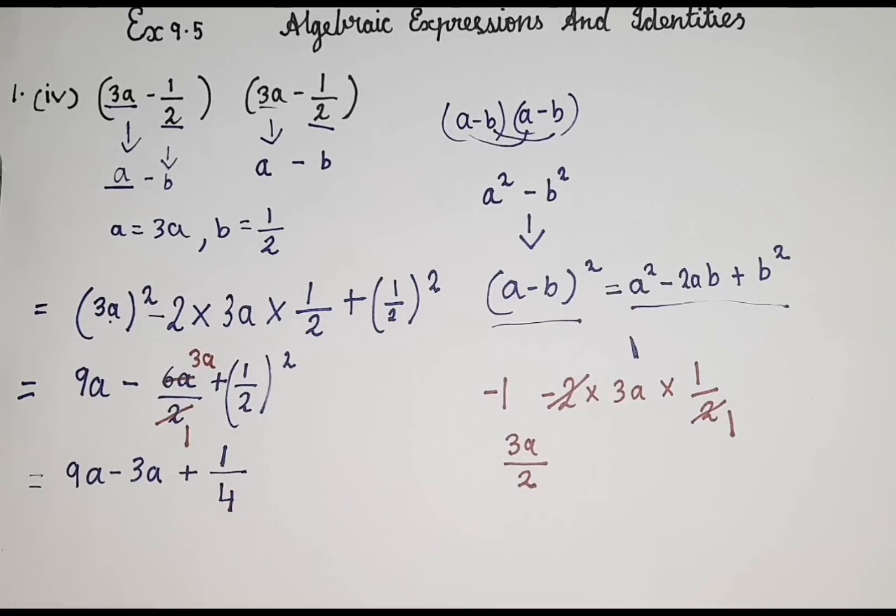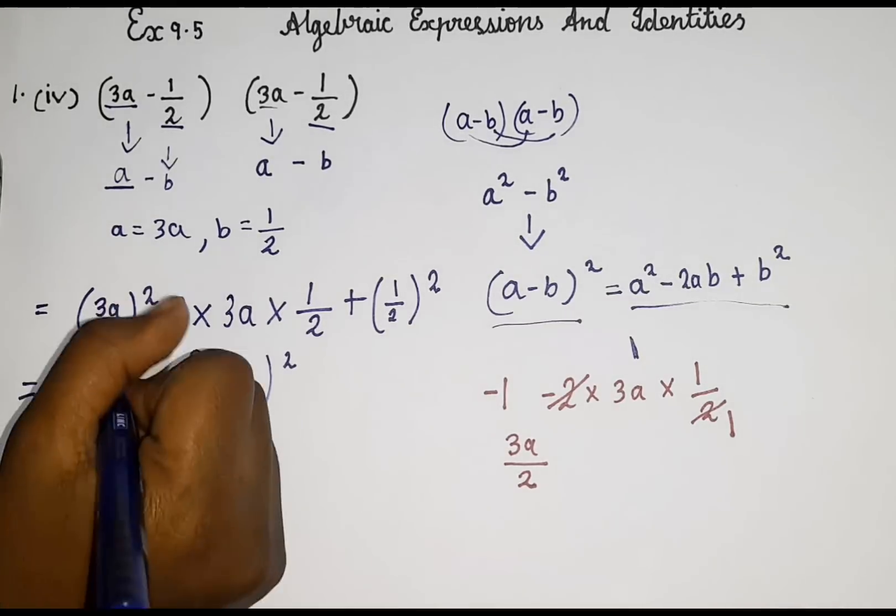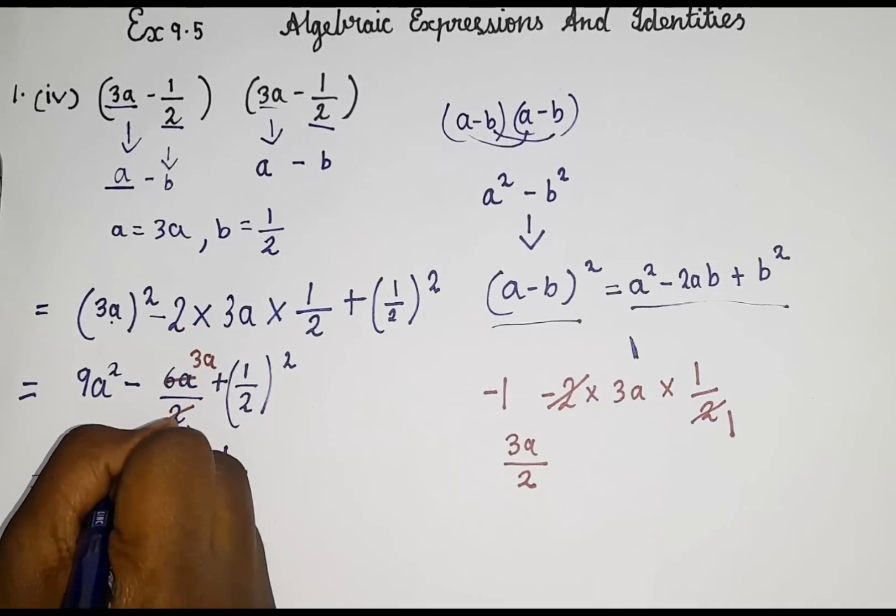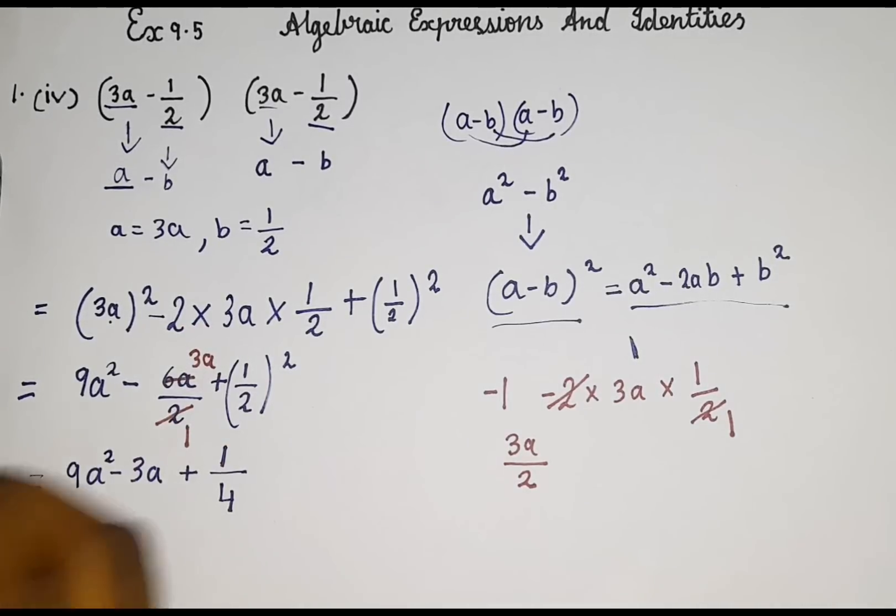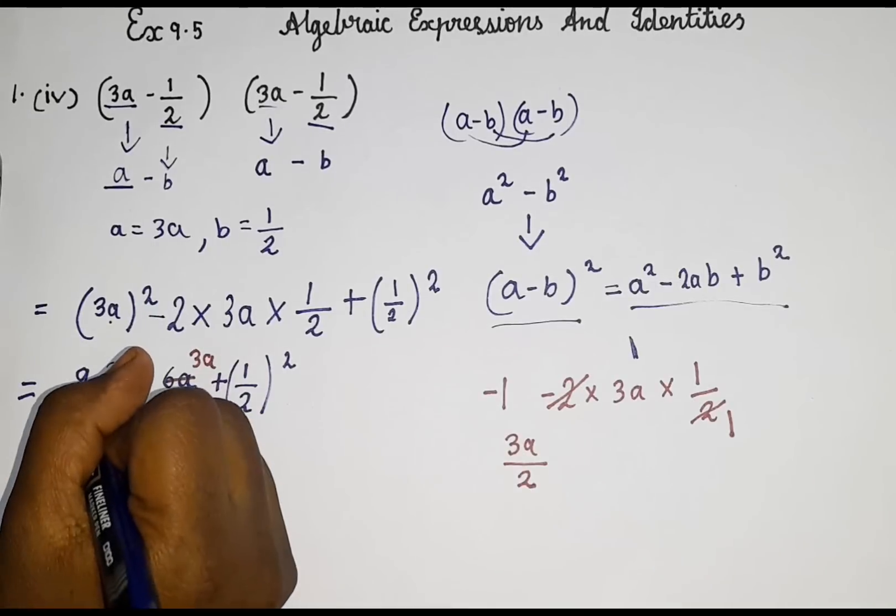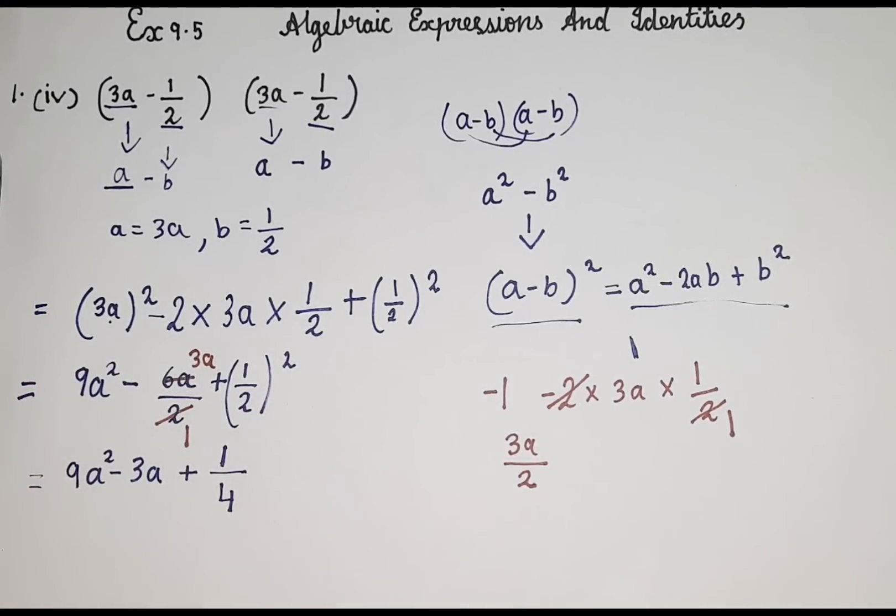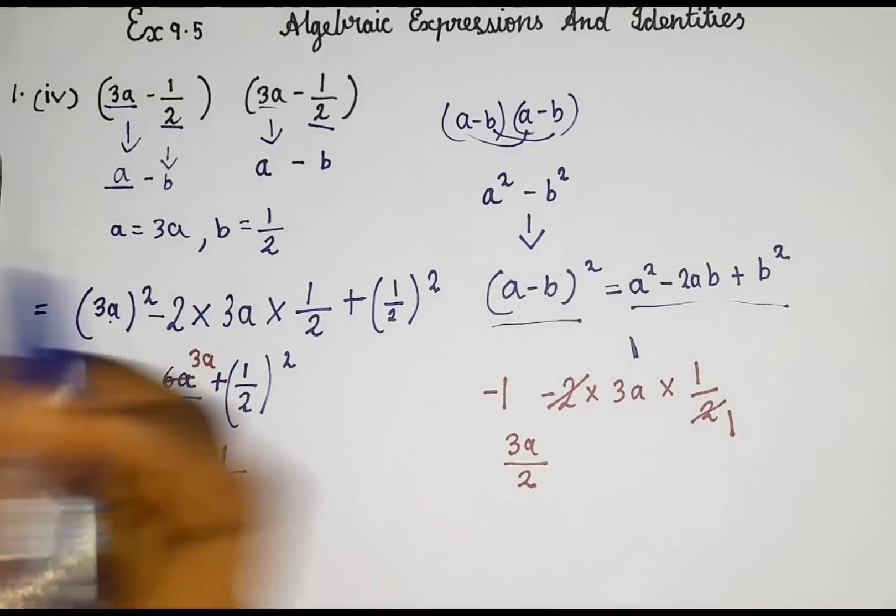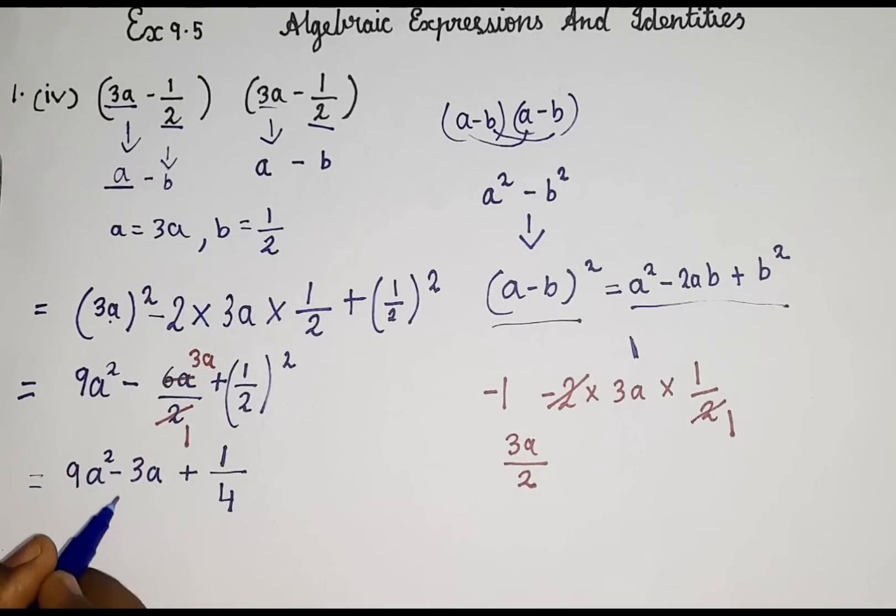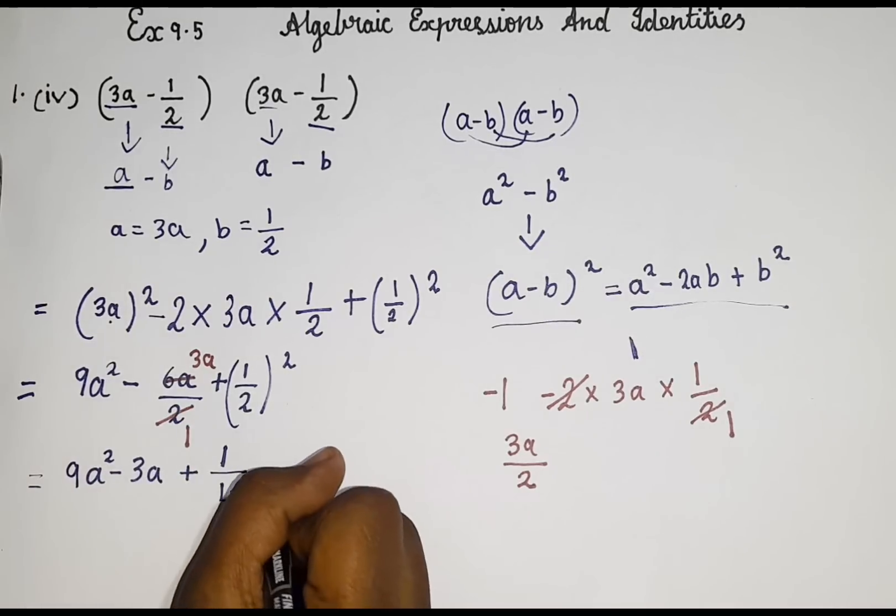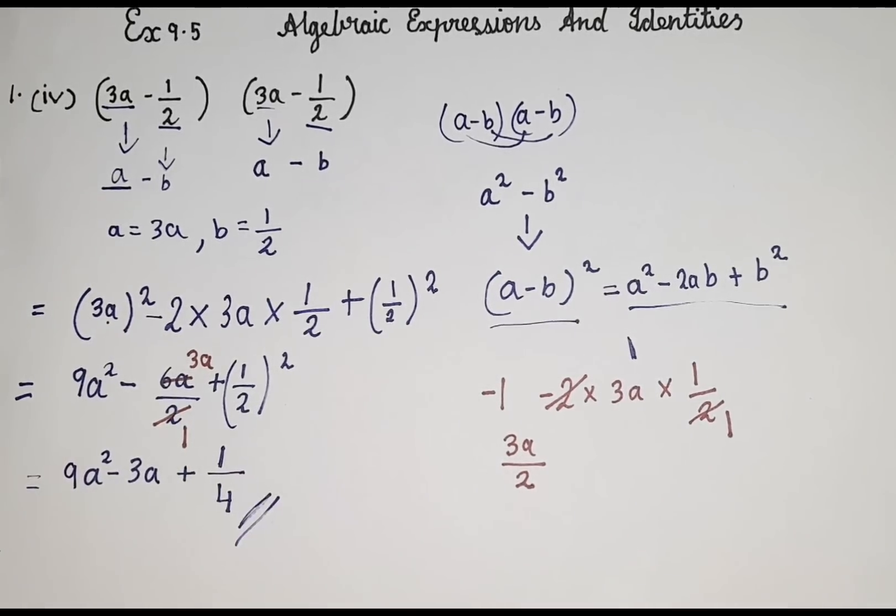I want to mention one more thing. Here we will get 9a square. How 9a square? Because 3 square is 9. And then a square means the answer is also a square. So 9a square. So 9a square minus 3a plus 1 by 4. So this is the answer for this solution.